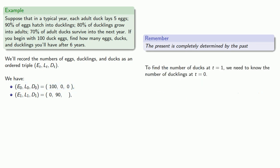So to find the number of ducks at t equals one, we need to know the number of ducklings at t equals zero. Since there aren't any ducklings at t equals zero, there won't be any ducks at t equals one. And so D_1 is equal to zero.